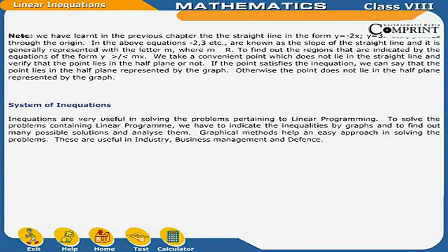We learnt in the previous chapter that straight lines of the form y = -2x, y = 3x, etc., pass through the origin. In these equations, -2, 3, etc., are known as the slope of the straight line, generally represented by the letter m, where m belongs to R. To find the regions indicated by inequalities of the form y > mx or y < mx, we take a convenient point not on the line and verify whether it lies in the half plane. If the point satisfies the inequation, it lies in the half plane represented by the graph; otherwise, it does not.